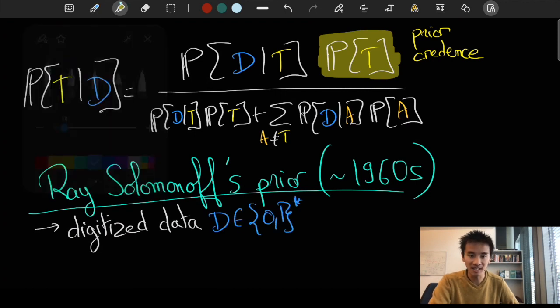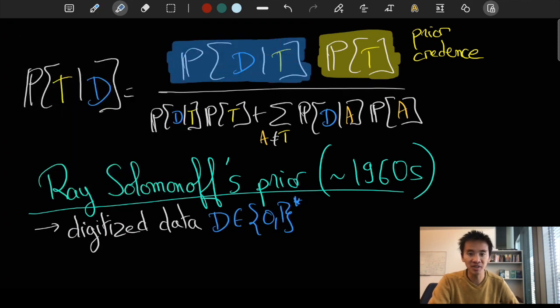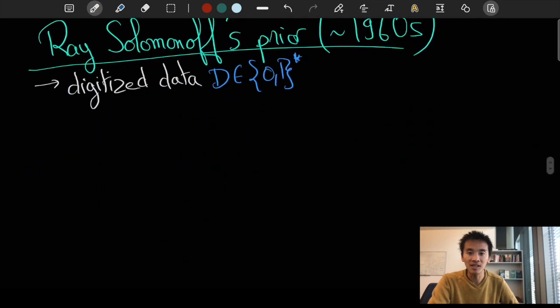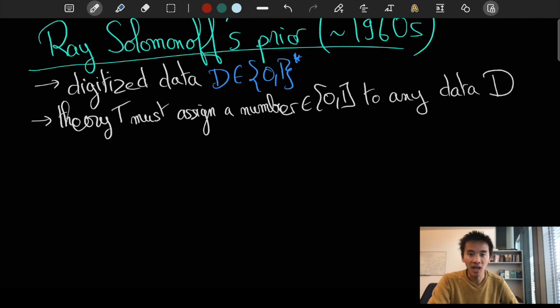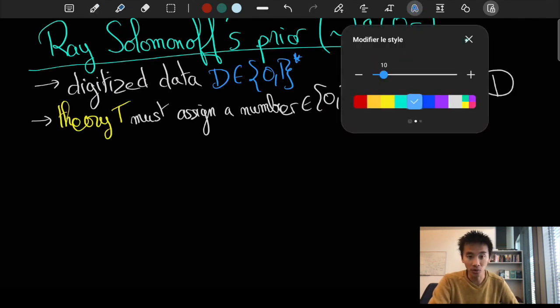As a result, any theory T will be consistent with Bayesianism if and only if it successfully assigns a probability to any data D, i.e. to any sequence of zeros and ones in a manner that is consistent with the laws of probabilities.